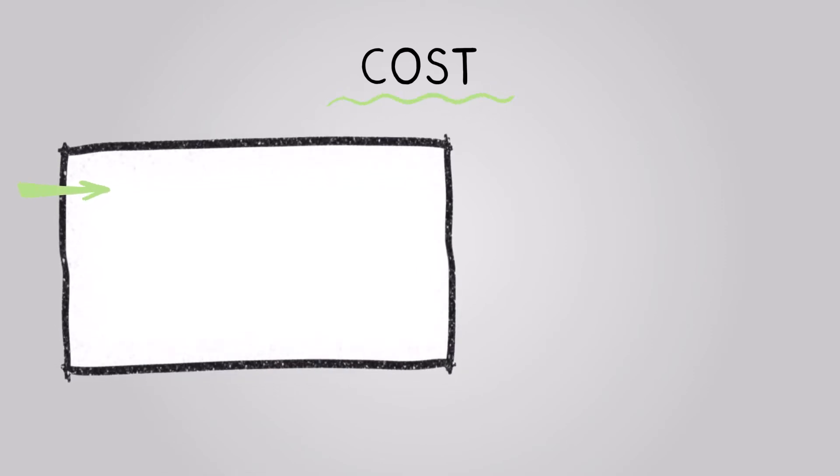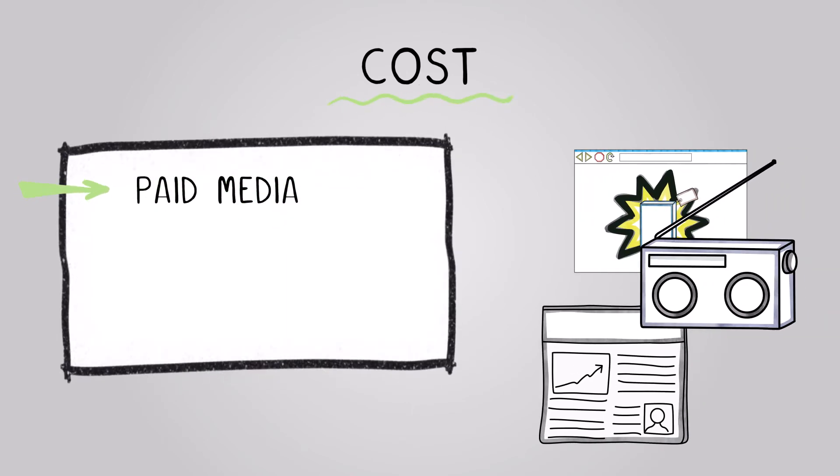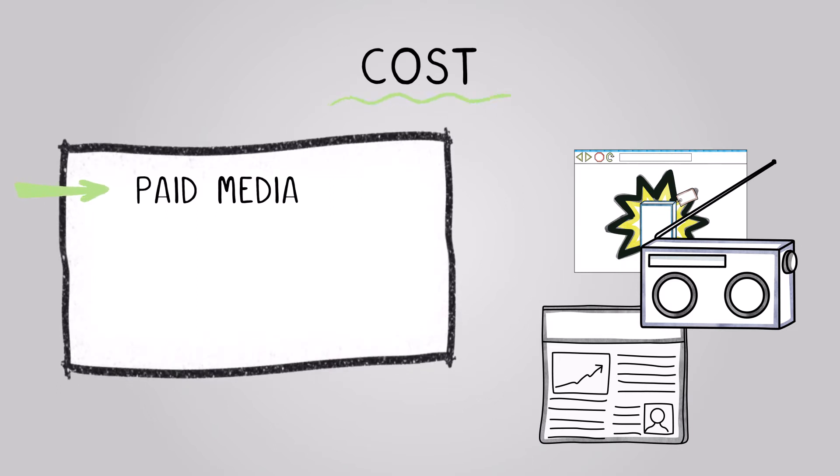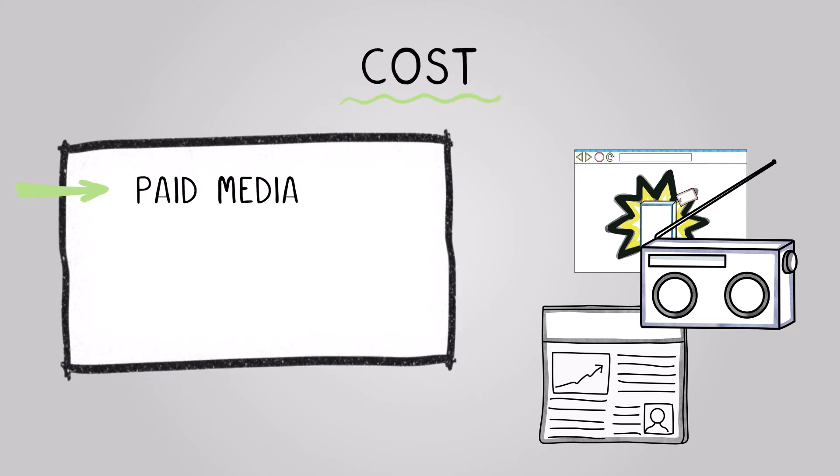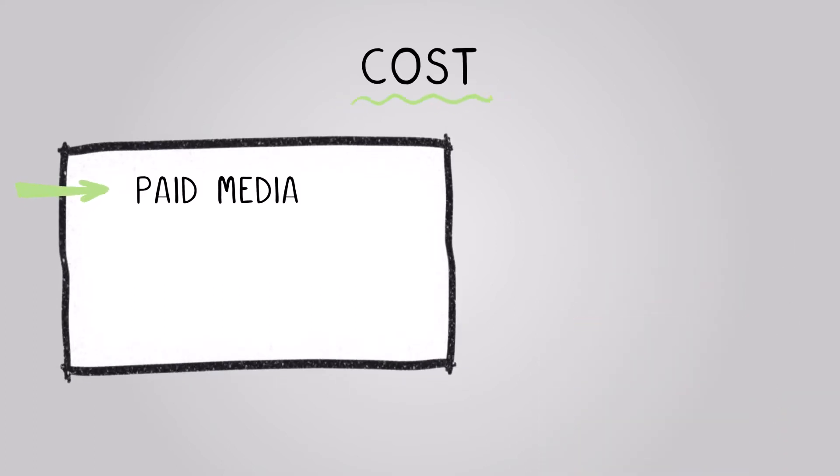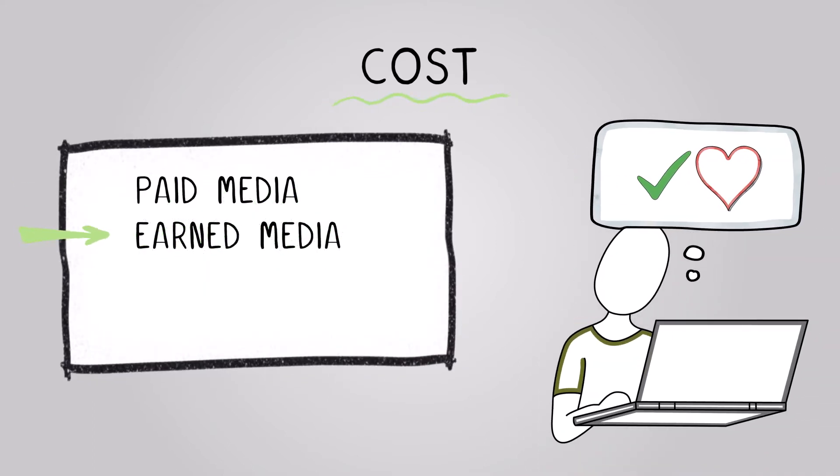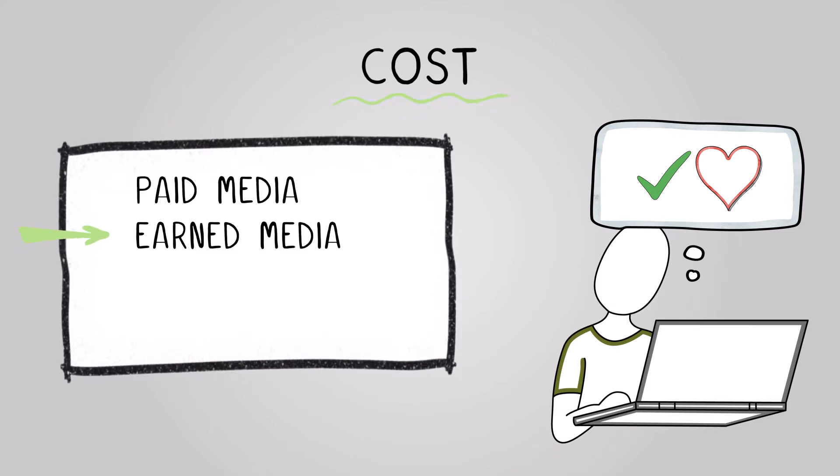When thinking about the cost, it can be worth splitting methods of promotion into three categories. Paid media involves direct payment for promotional channels such as press, online, and radio advertising or poster sites. High sales generation is necessary for cost-effectiveness. Earned media includes consumer-generated promotion like word of mouth, social media mentions, and review sites, with no direct costs.